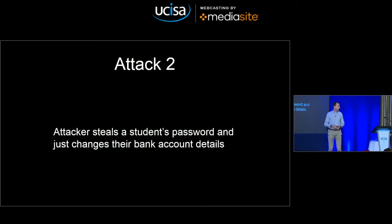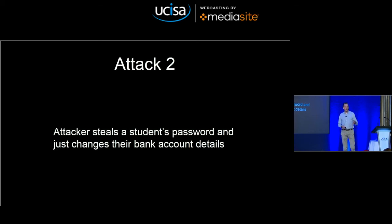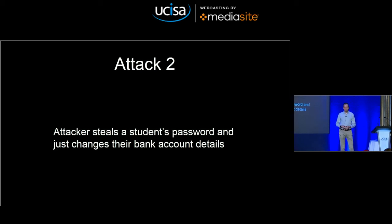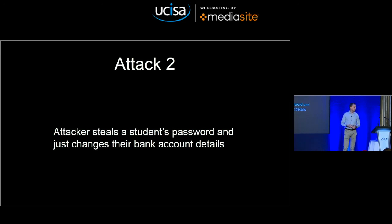This is how it's generally happening at the moment: somebody phishes the student, steals their password, and just changes their bank account details. Bonus marks — if the attacker knows enough, they'll try to do it just before the payment is due so there's the least time for the attack to be reverted before the money leaves. What can you do? You can try training people about phishing. We did a phishing exercise on the IT staff in the university — it didn't go well. The hope for students is even less. They're probably always going to get phished. When you're threat modeling, a good assumption is that some number of students are always going to get phished.